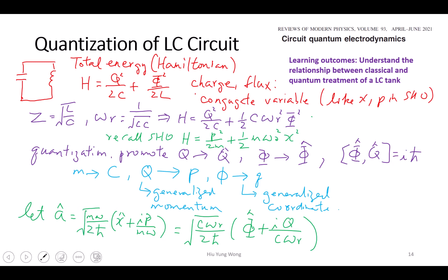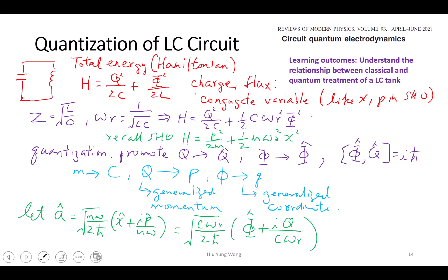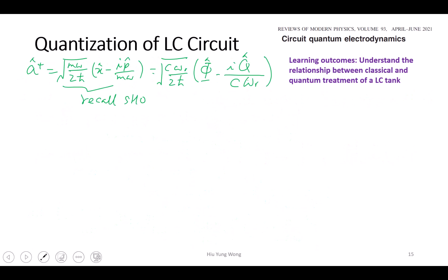Similarly I have a dagger equal to square root M omega in the simple harmonic case. I need to emphasize that this is not an equation for this slide, this is just recall. I just want you to recall SHO and then we do the substitution.